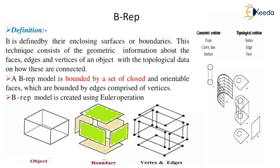There is one object as shown in the figure, with boundaries, vertices, and edges for that object. On the right-hand side, observe the geometric entities — point, curve, line, surface — and topological entities — vertex, edge, faces. These vertex, edge, and faces play a very important role in the B-Rep representation model. Instead of geometric entities, these vertices, edges, and faces make us the solid.